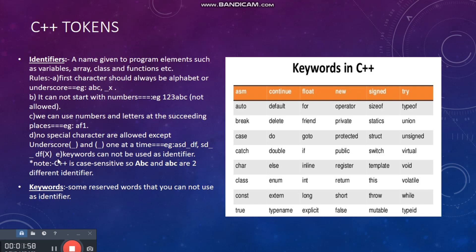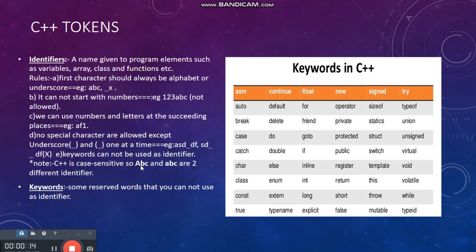The fifth rule is that keywords cannot be used as identifiers. We will learn what keywords are in the next point. One important note: C++ is a case-sensitive programming language. As you can see, capital 'A' and small 'a' are two different identifiers. You can use both in one program as two different names.